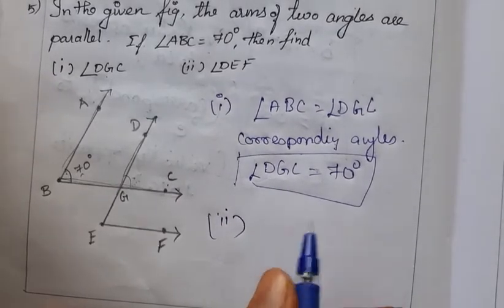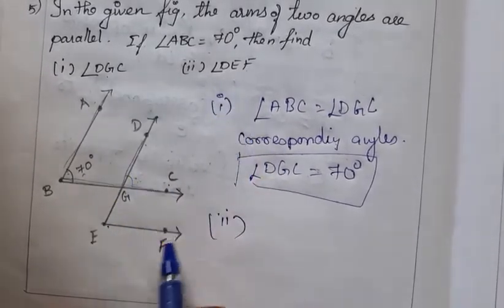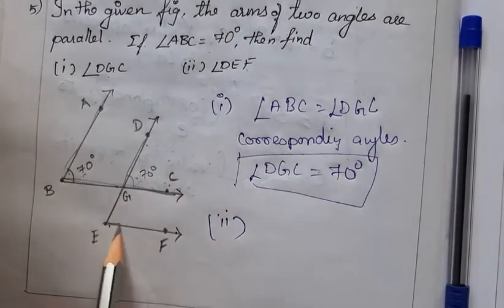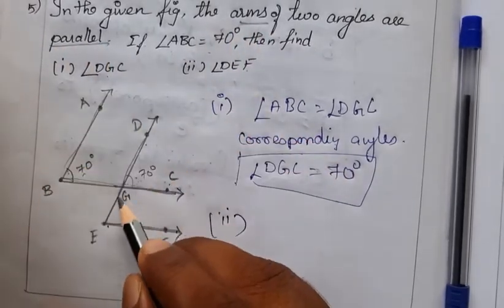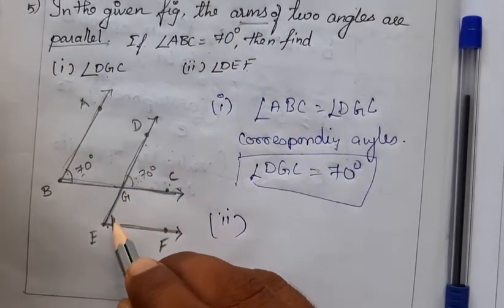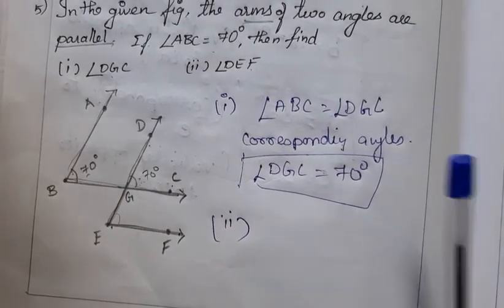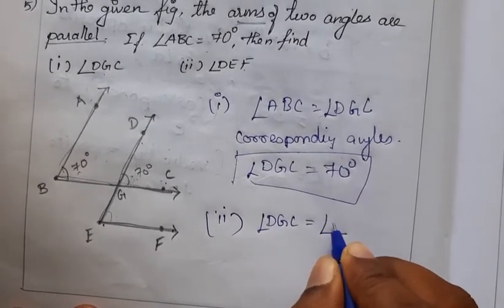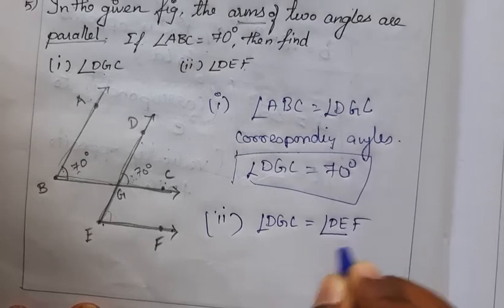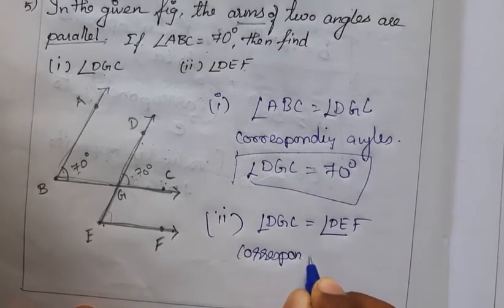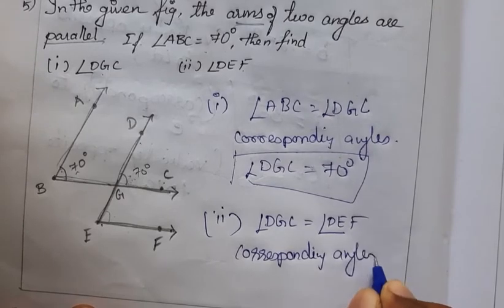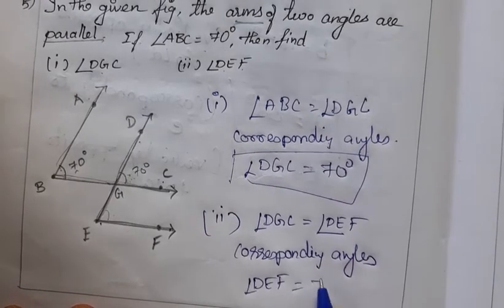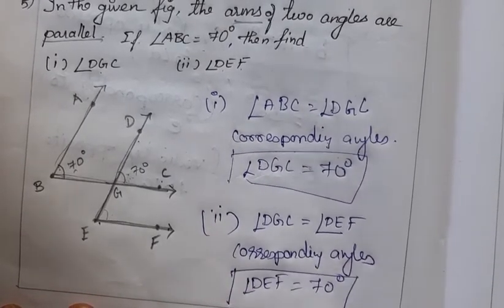Now find angle DEF. Since BC is parallel to EF and the line through G acts as a transversal, angle DGC corresponds to angle DEF. Therefore angle DEF also equals 70 degrees.